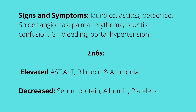Signs and symptoms of cirrhosis include ascites, petechiae — red dots on the skin — jaundice, pruritus or itchiness, palmar erythema, spider angiomas, fetor hepaticus with a fruity breath odor, peripheral edema, and confusion due to encephalopathy. Labs will show elevation in AST, ALT, bilirubin, and ammonia levels, with a decrease in serum protein, albumin, red blood cells — leading to decreased hemoglobin and hematocrit — as well as decreased platelets.